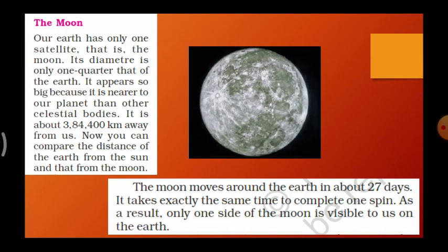The Moon moves around the Earth in about 27 days. It takes exactly the same time to complete one spin. All the planets move around the Sun, but the Moon moves around the Earth. Because the Moon takes 27 days to both orbit the Earth and complete one spin, as a result only one side of the Moon is visible to us from the Earth.